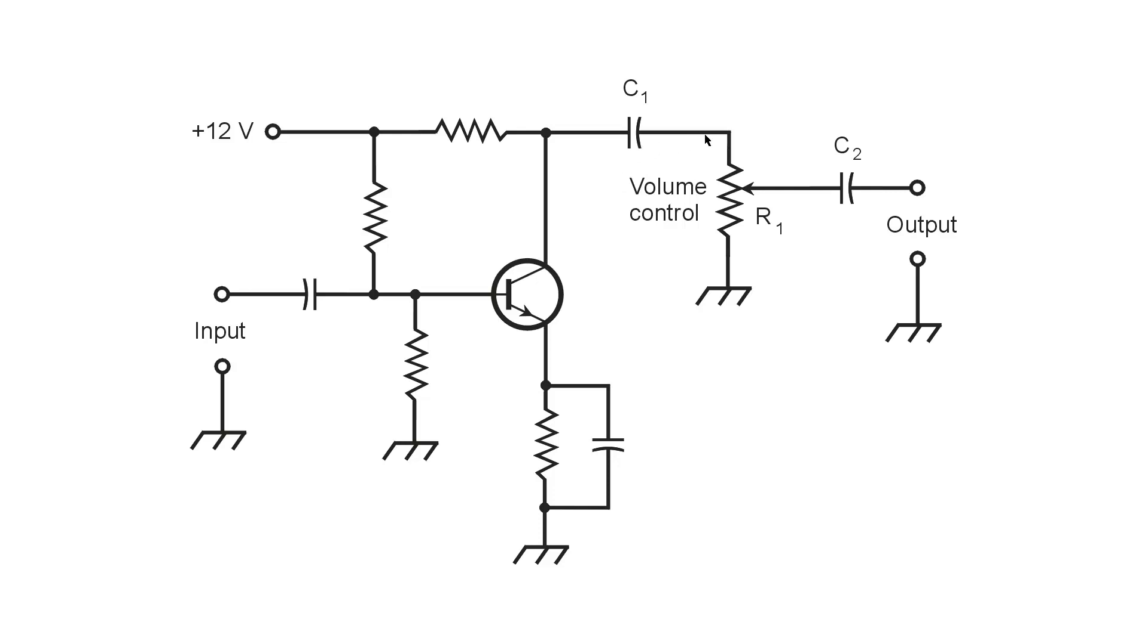Instead, what you get here is an AC audio signal across resistor R1, all the way across the whole resistor. But it's a potentiometer, as you'll notice, and you can pick off various amounts of that AC, all the way from none, down at the very bottom here, when the wiper is down at the very bottom, to all, when it's at the top, and anything in between.